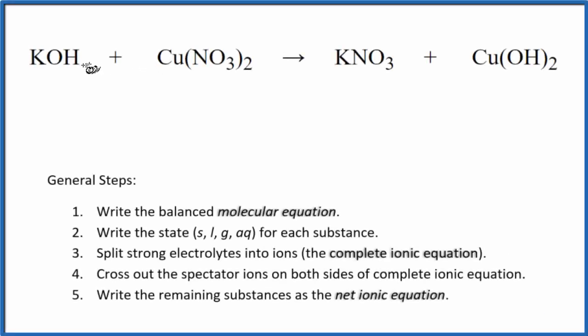In this video, we'll write the balanced net ionic equation for KOH plus Cu(NO3)2. This is potassium hydroxide plus copper 2 nitrate. First thing we need to do is balance the molecular equation. This is the molecular equation.